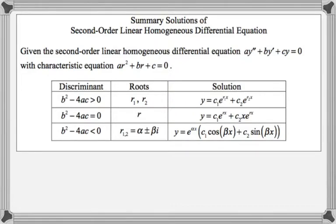If the discriminant is positive, you get two distinct real roots. In that case, the general solution to the differential equation has the form y = c₁e^(r₁x) + c₂e^(r₂x), and you're done.